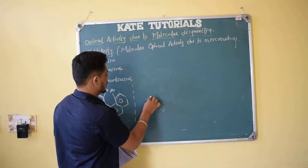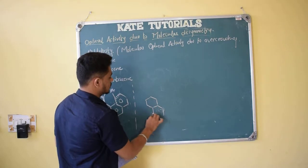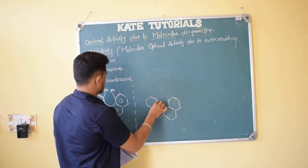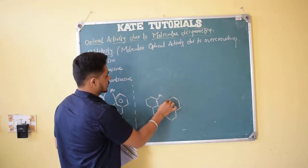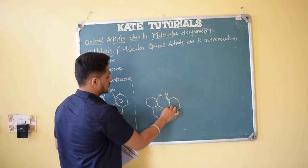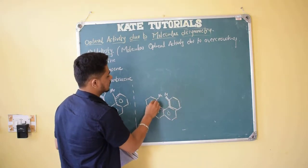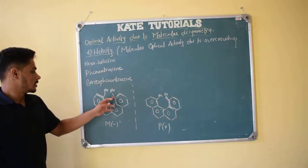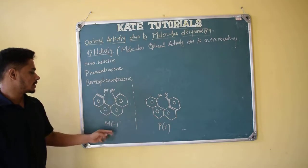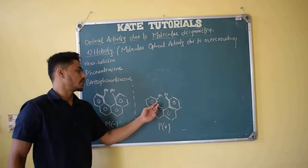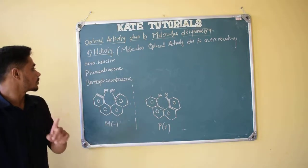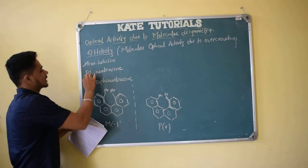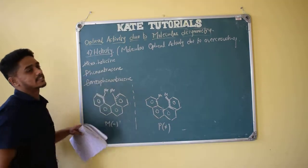These molecules are optically active because there is no plane of symmetry — they are not in a single plane. If we consider the mirror image, this end goes below and the other goes above. Right-handed above means P plus; right-handed below means M minus, or equivalently left-handed above means M minus. You can remember it one way — no need to get confused.